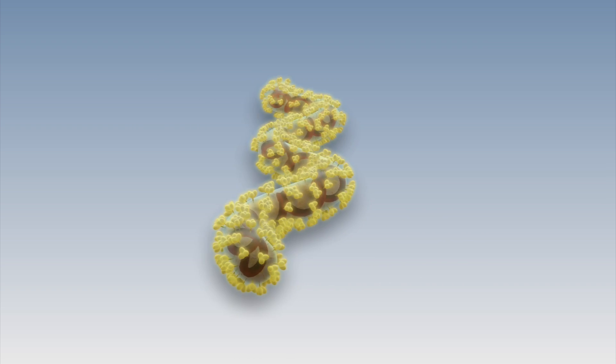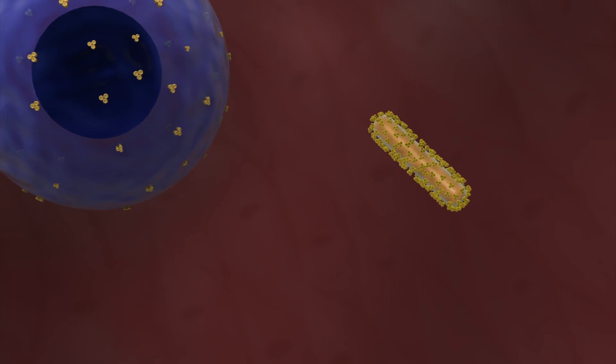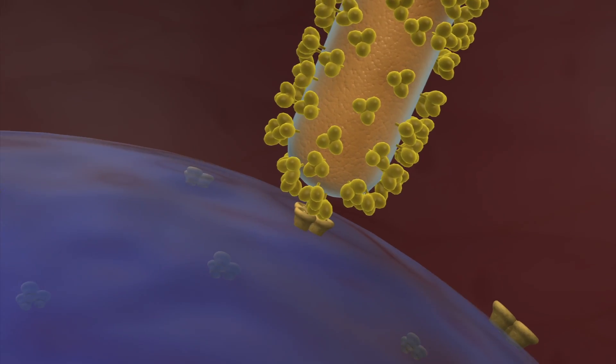The Ebola virus consists of a shell of glycoproteins surrounding genetic material, a single-stranded RNA. The glycoproteins attach themselves to receptors on human cells so as to invade them.